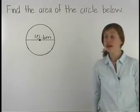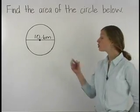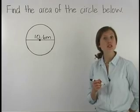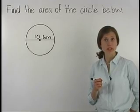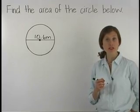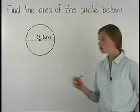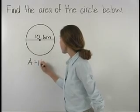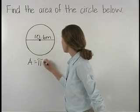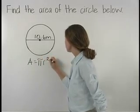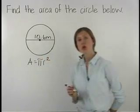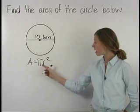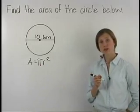To find the area of the circle shown here, start with the formula for the area of a circle, which is area equals pi r squared, or area equals pi times the radius squared.